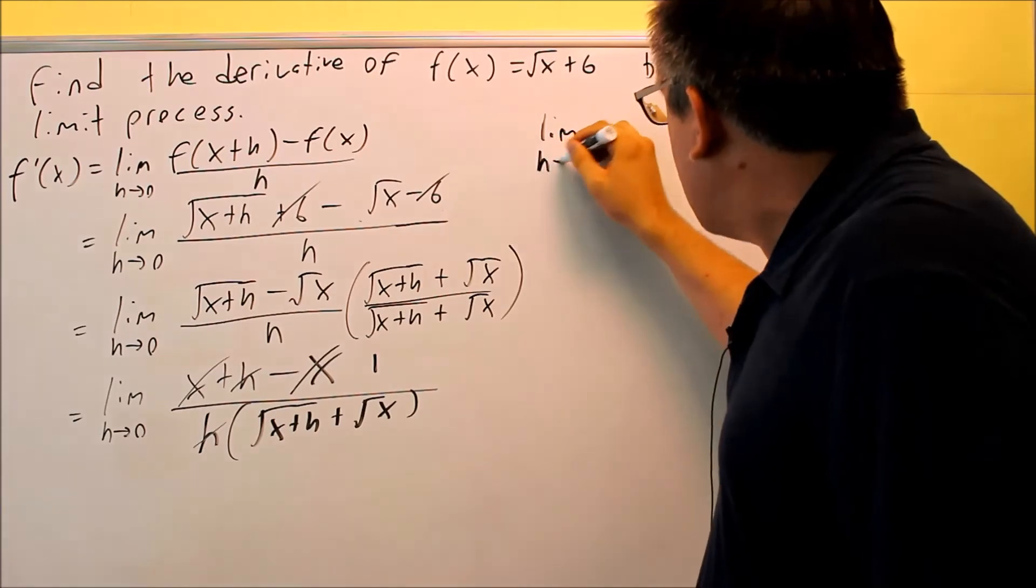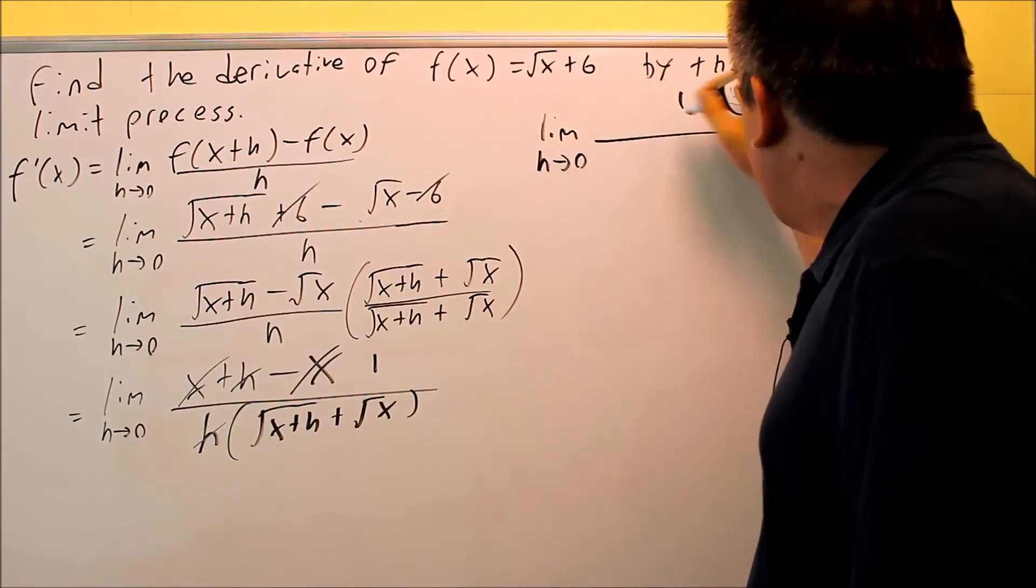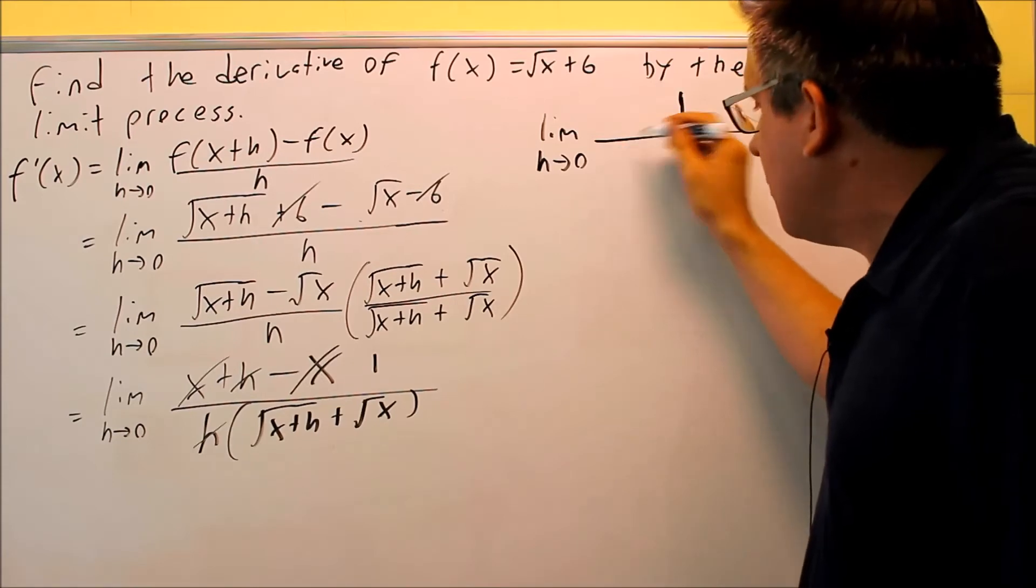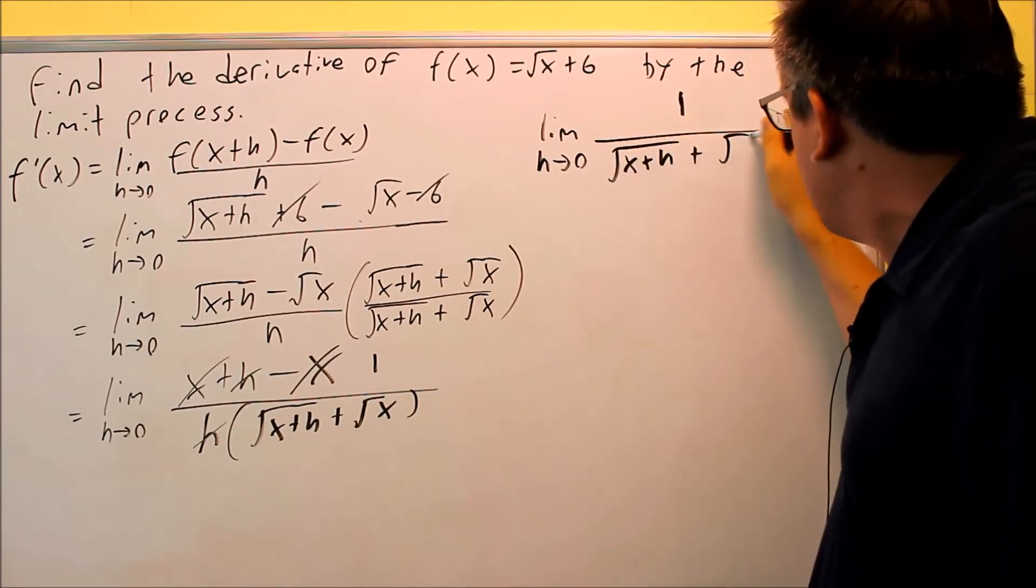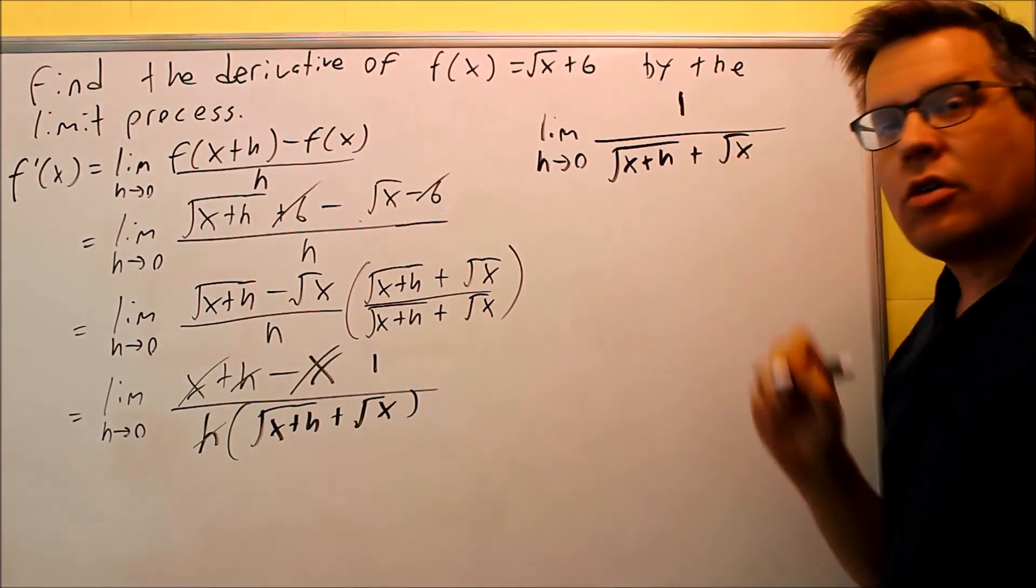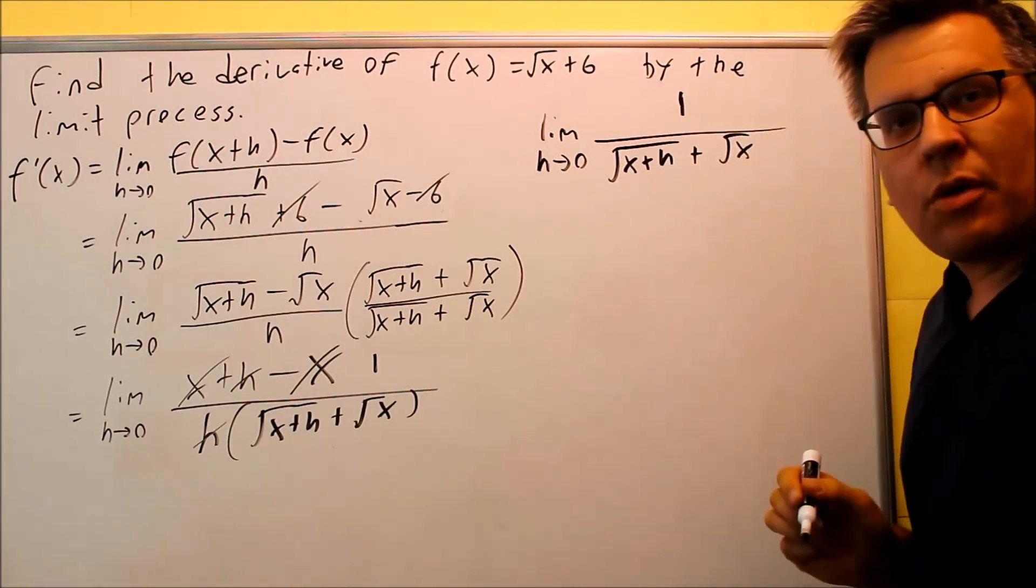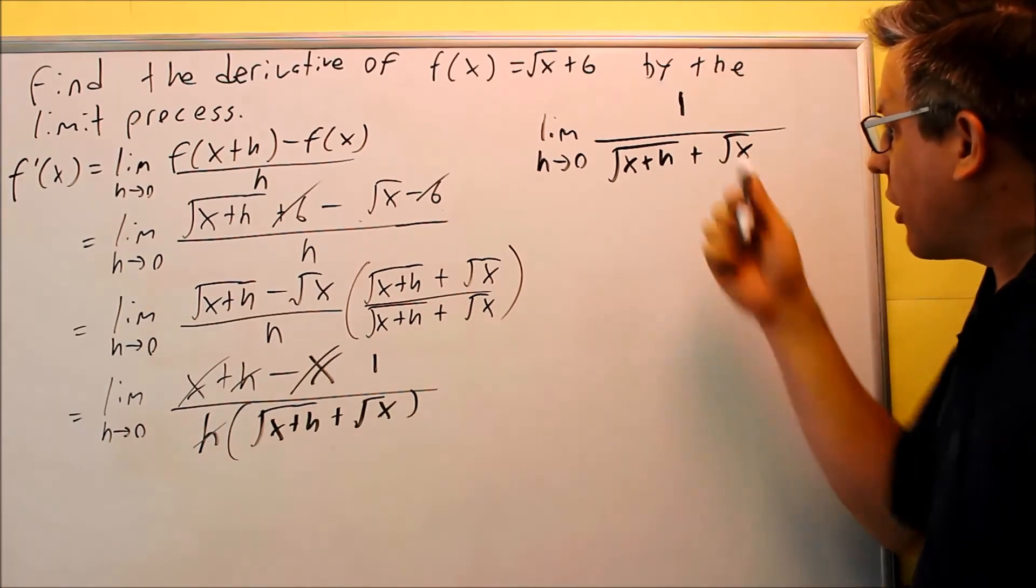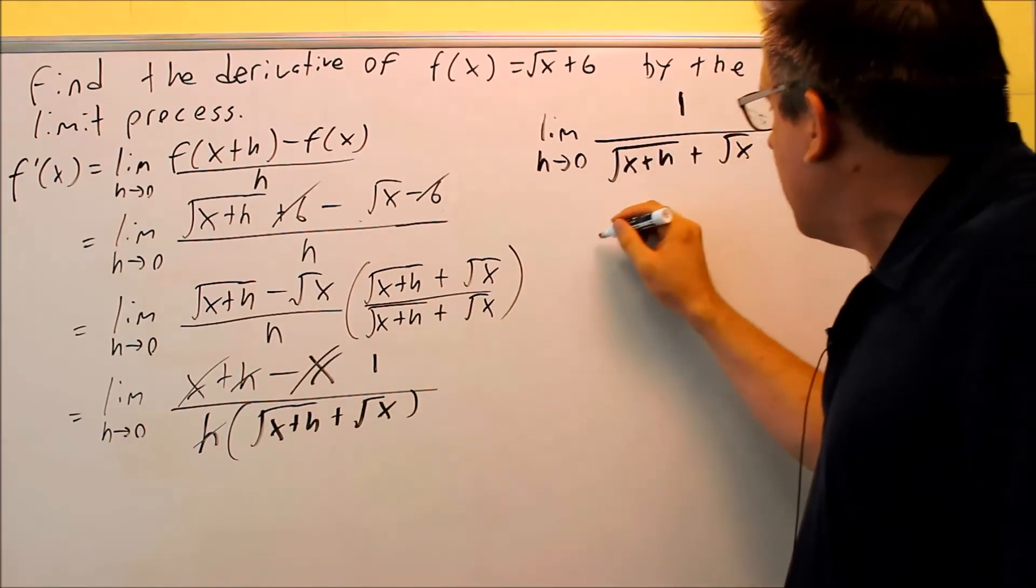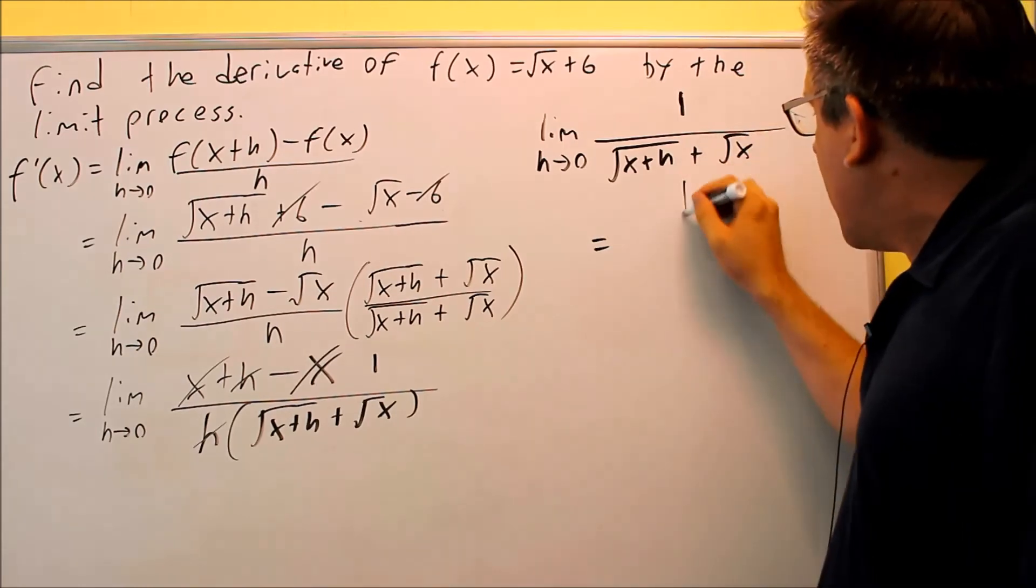It's going to be a limit, h goes to 0. I have a 1 on top. On the bottom, I have this right here. And if I put a 0 in there, now I'm not dividing by 0 anymore. That's why I wanted to get rid of that h on the bottom, so now I can finish the problem. I'm going to put 0 in for top and bottom.